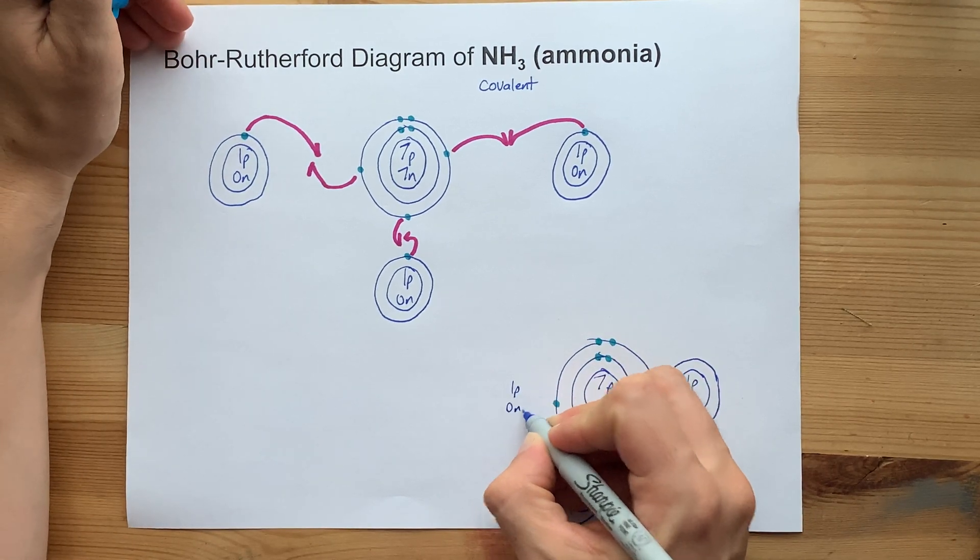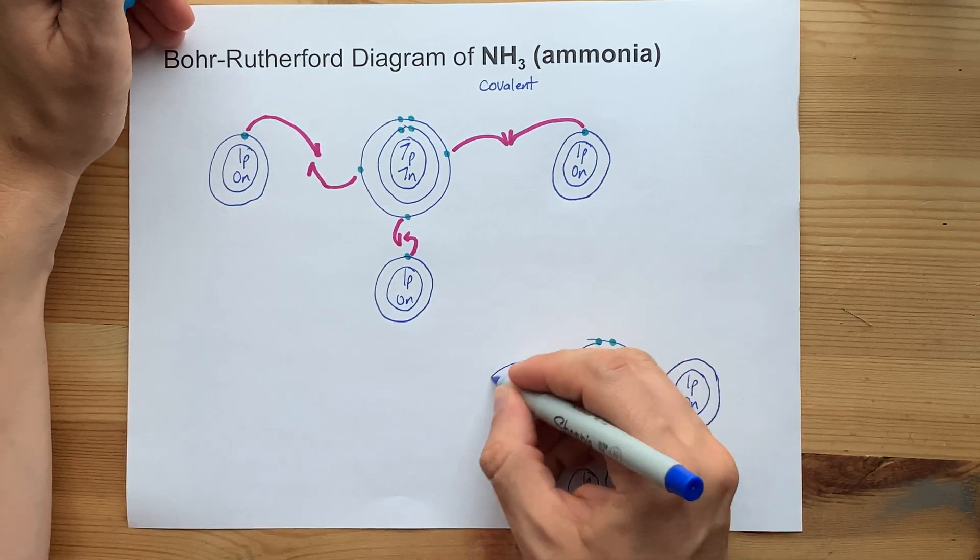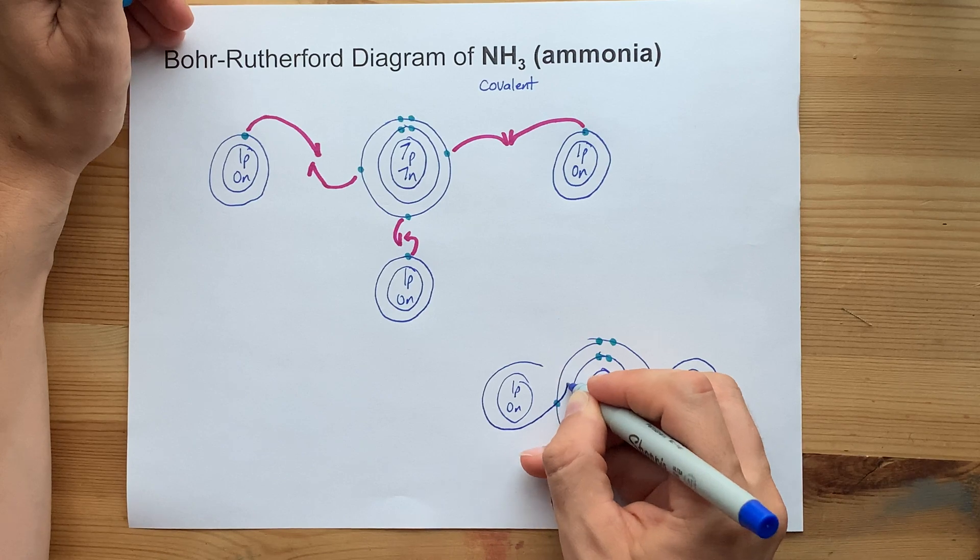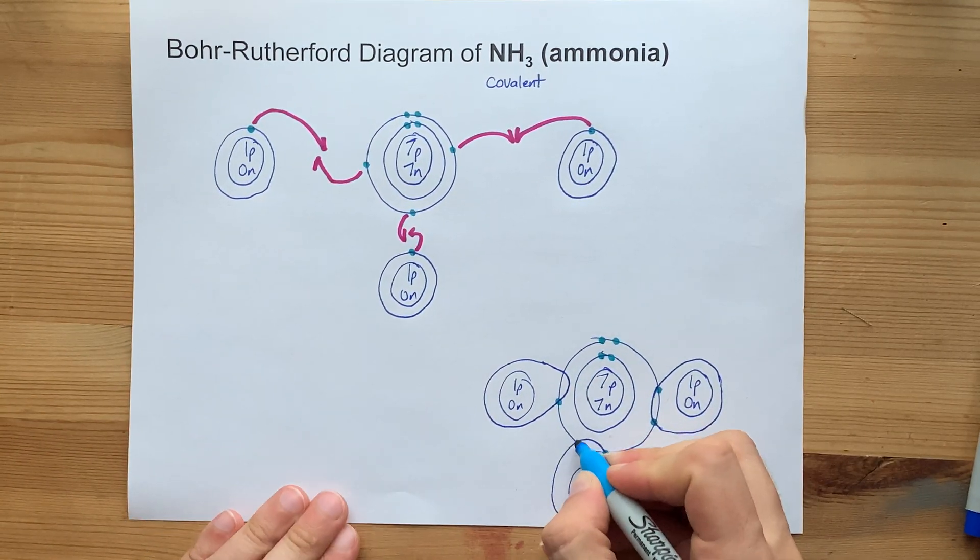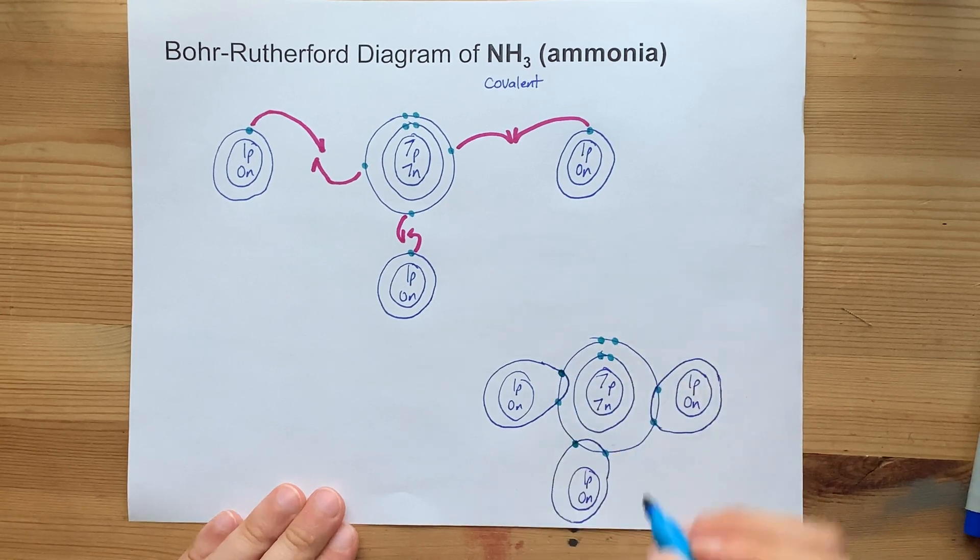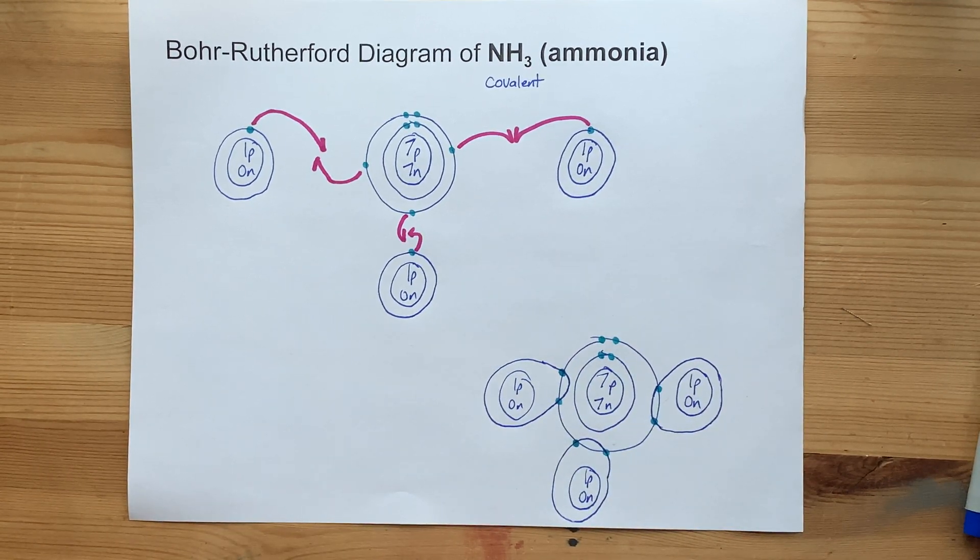One proton, zero neutrons, big circle. Go through it, come out of it, and at each of those intersection points, dot, dot. There you go. That's beautiful right there.